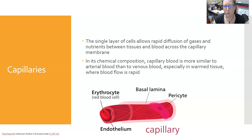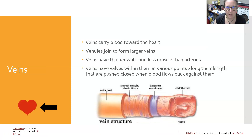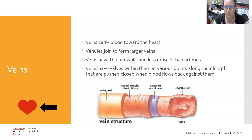Capillaries are where diffusion of gases and nutrients occurs between the blood and the tissues. In chemical composition, capillary blood is more similar to arterial blood than to venous blood, especially in warm tissue where blood flow is rapid. Veins carry blood back toward the heart. The venules leave the capillaries — capillaries basically become venules — and then venules join together to form larger veins.